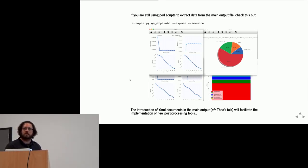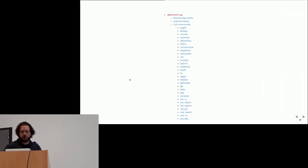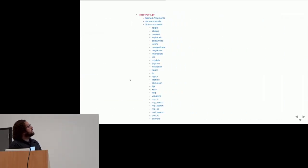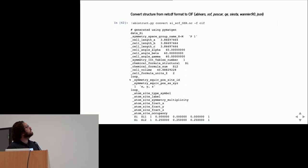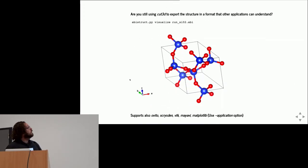The next script is abistruct. These are all the commands that are available. I'm not going to cover all of them, just the most important cases. A typical problem: we have a netCDF file and we want to export the structure in another format. We can use abistruct convert, and then we specify the format at the end. Other formats are supported as well.